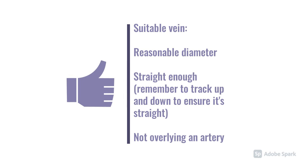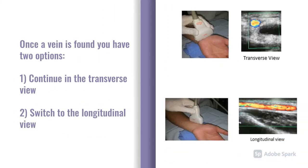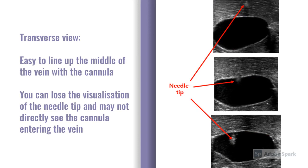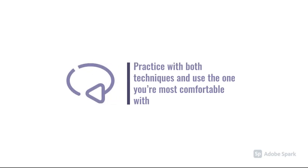Find a suitable vein with sufficient diameter that is straight enough to hold a cannula. You then have two options for the probe: stay in the transverse plane or switch to the longitudinal plane. In transverse, it's easy to line up the middle of the vein with the cannula, but you can lose visualization of the needle tip as it passes through soft tissue. In longitudinal, you get better visualization of the needle throughout the procedure, but it can be difficult to align the cannula with the center of the vessel, and you may inadvertently miss a smaller vessel. Personally, I prefer to stay in the transverse plane throughout. Practice both and find what you're most comfortable with.